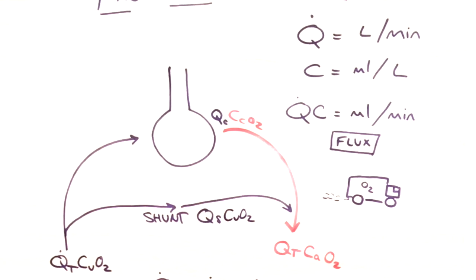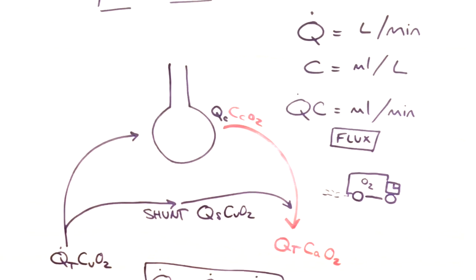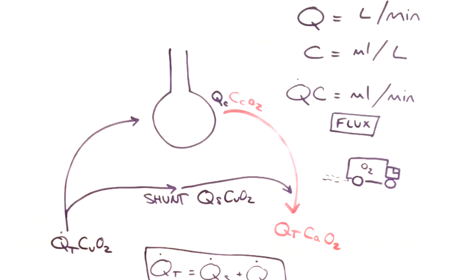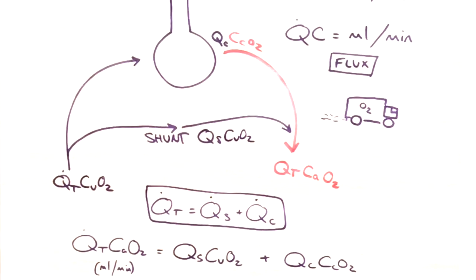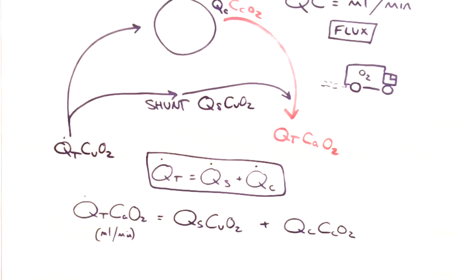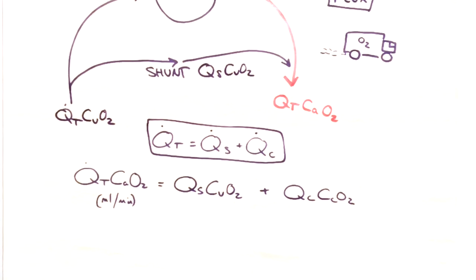Now we have all the terms we need for our final shunt equation. Here you can see that the total oxygen flux back to the left side of the heart is the sum of the shunted oxygen flux and the alveolar oxygen flux.